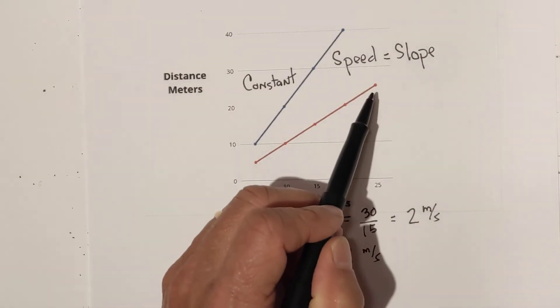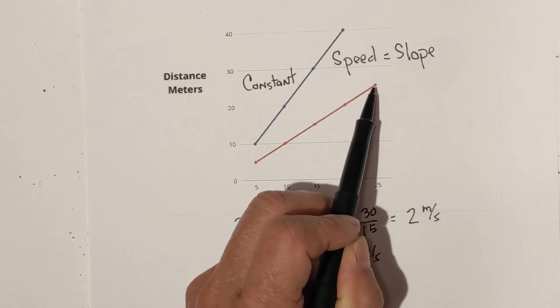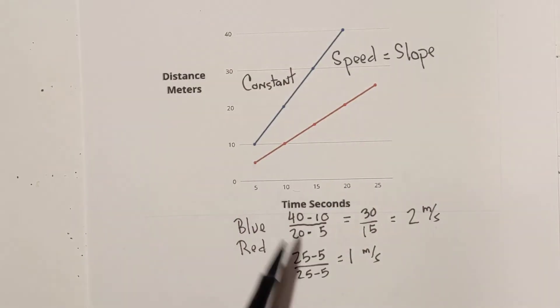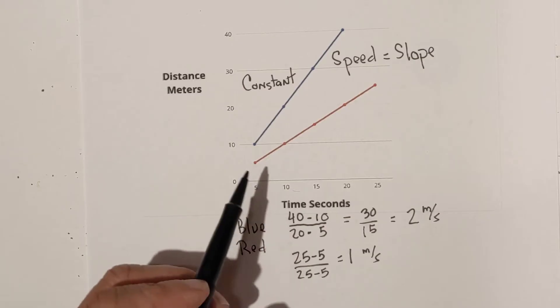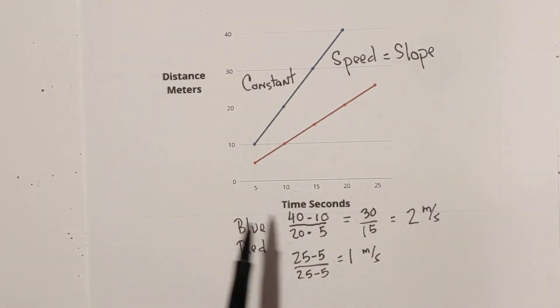And for the red, it ends up at 25 and it started at 5. And then the x, x2 and x1 is down here. So, you can see from the calculation,